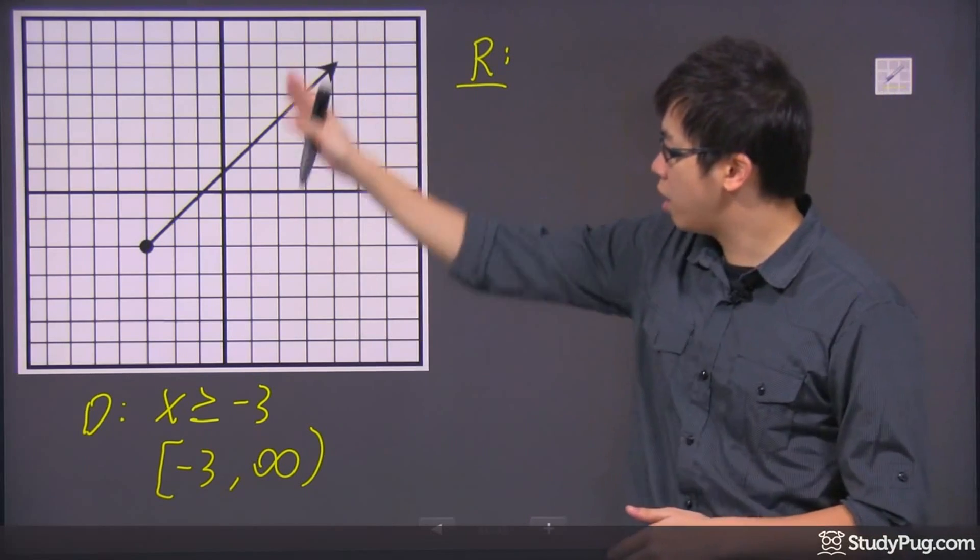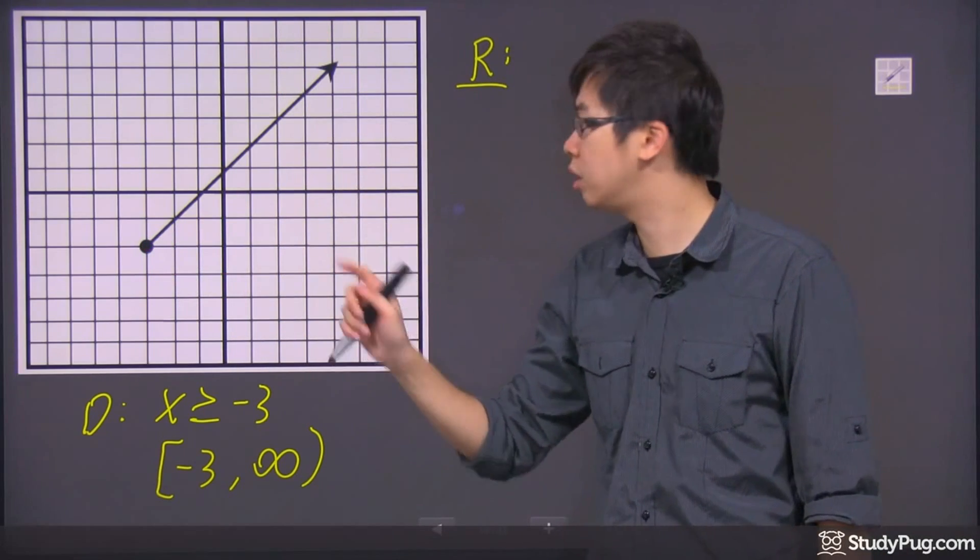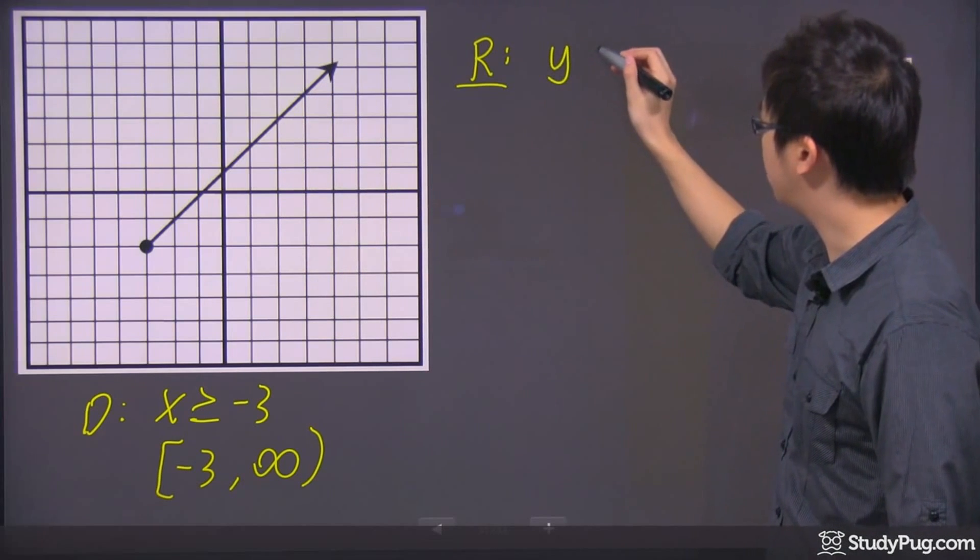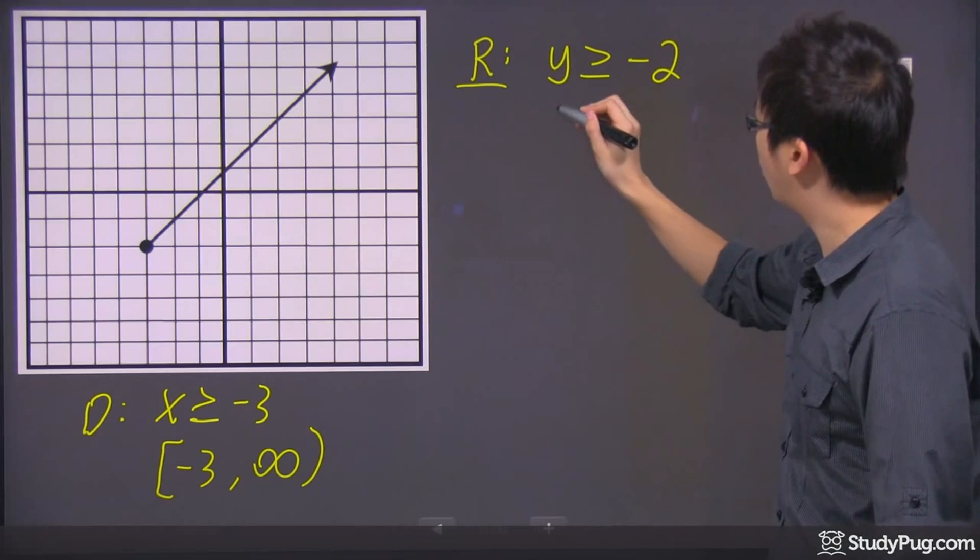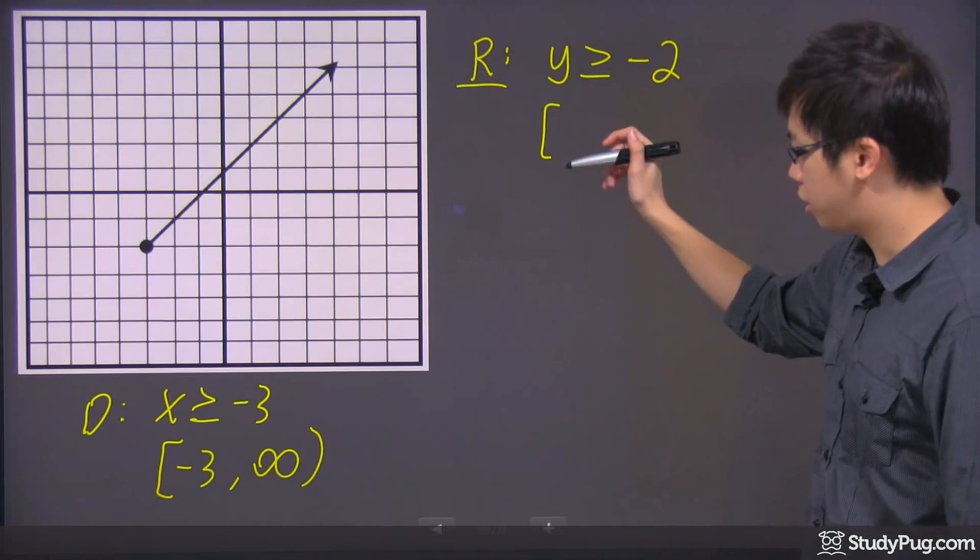So if you look at the y direction, it seems like you're starting at negative two and it goes up infinitely because there's an arrowhead. So I could do my y is going to be greater and equal to negative two, or I can also do what I just did here for the set notation.